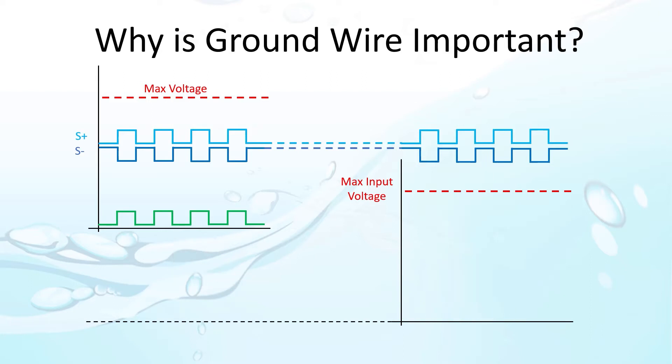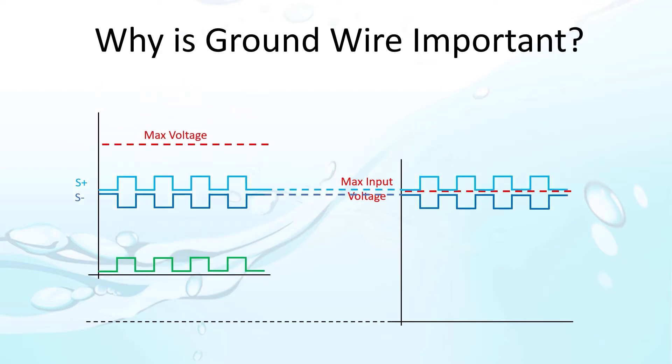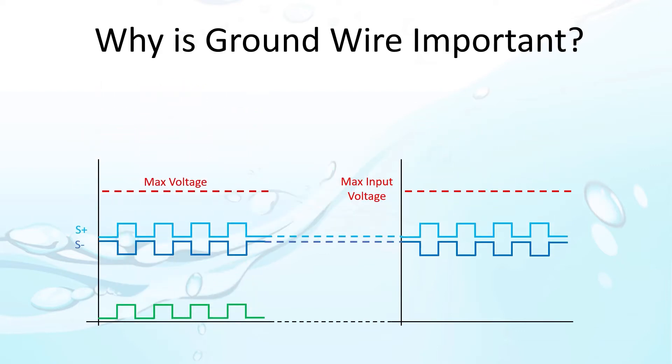Providing a signaling ground wire ensures both ends are using signaling relative to this same ground which prevents electronics from being exposed to dangerous voltage levels and gives the drive a good, clean, reliable signal to work with.